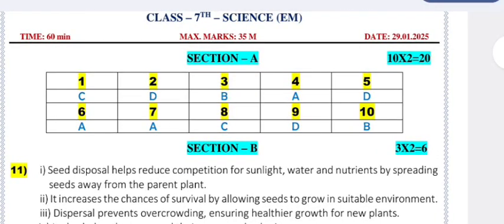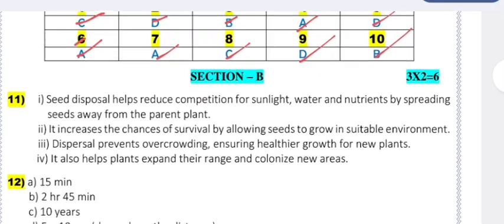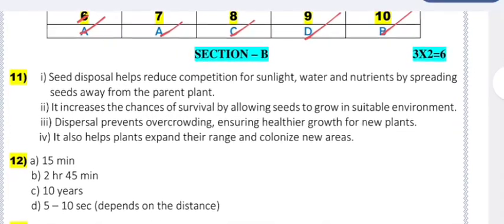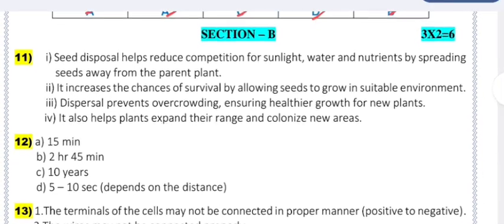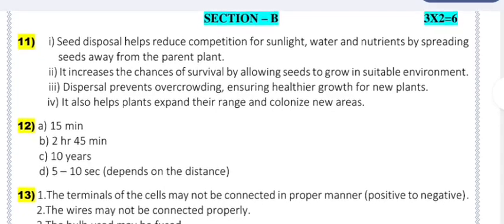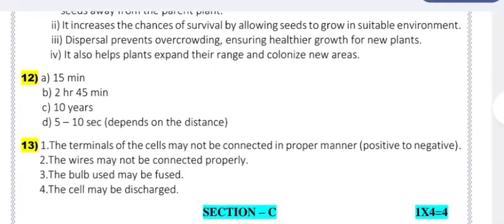Answer key for 7th class science: Section A — 1C, 2D, 3B, 4A, 5D, 6A, 7A, 8C, 9D, 10B. Section B (3 × 2 = 6 marks): Question 11 — Seed dispersal helps reduce competition for sunlight, water, and nutrients by spreading seeds away from the parent plant. It increases the chances of survival by allowing seeds to grow in suitable environments, prevents overcrowding, ensures healthier growth of new plants, and helps plants expand their range and colonize new areas.